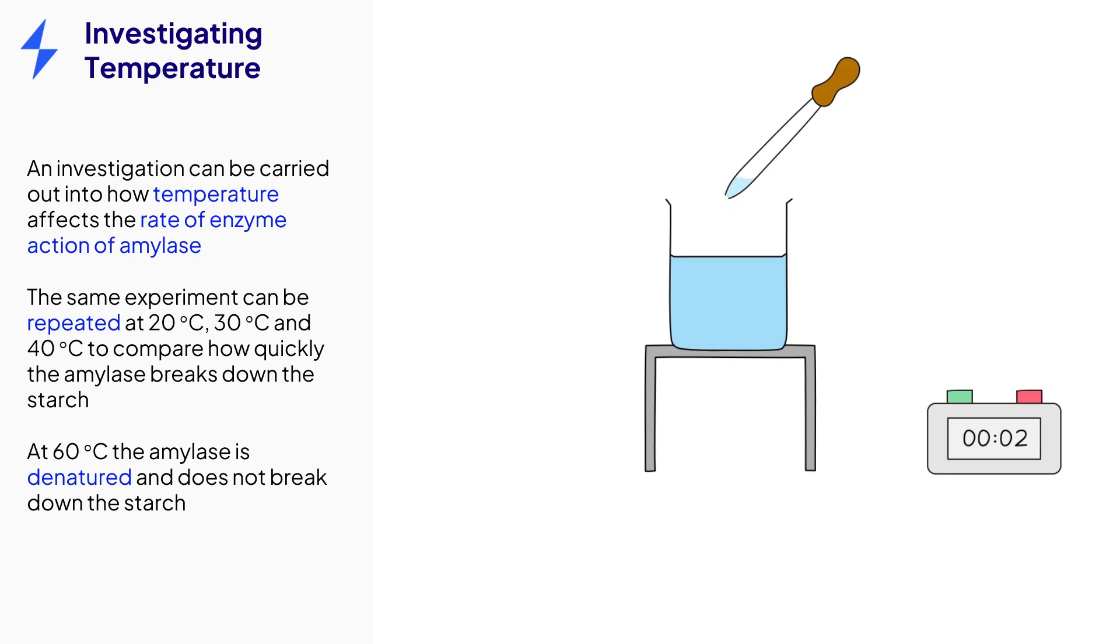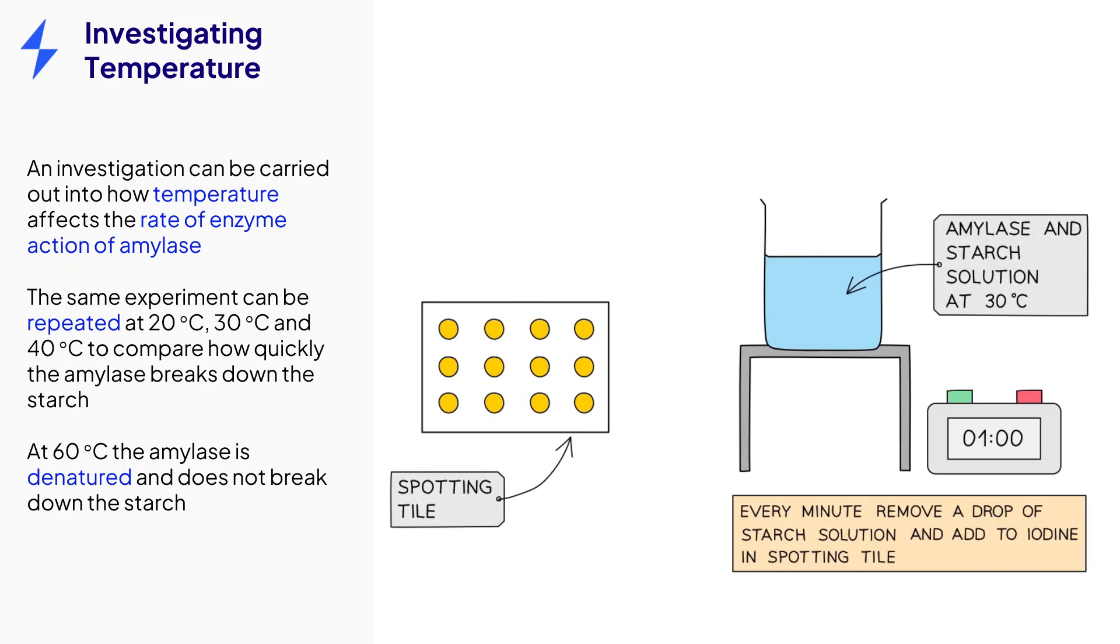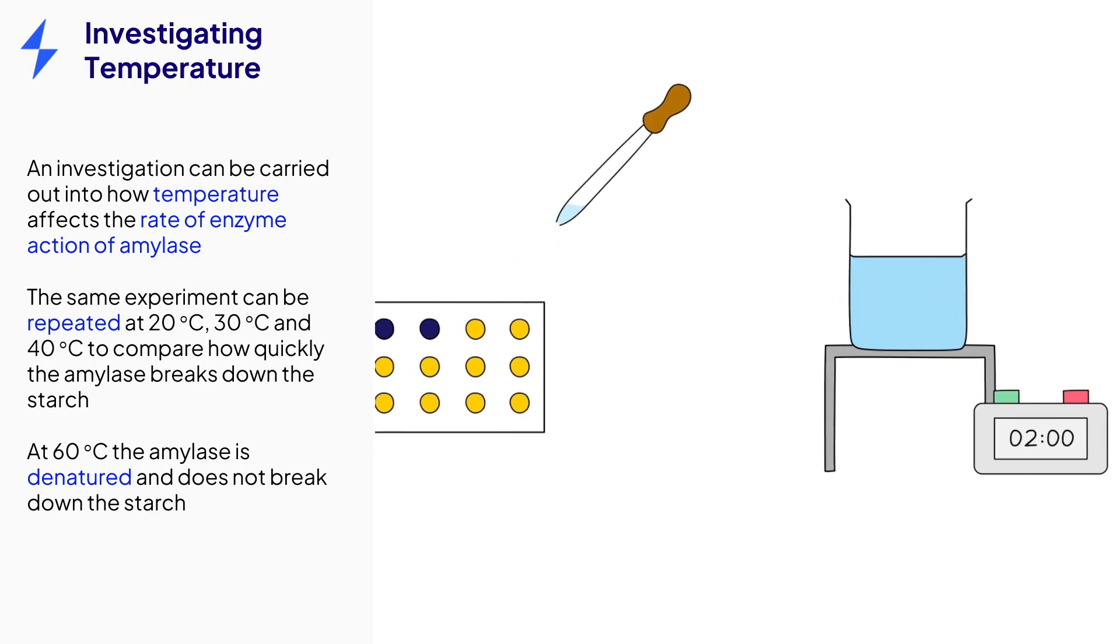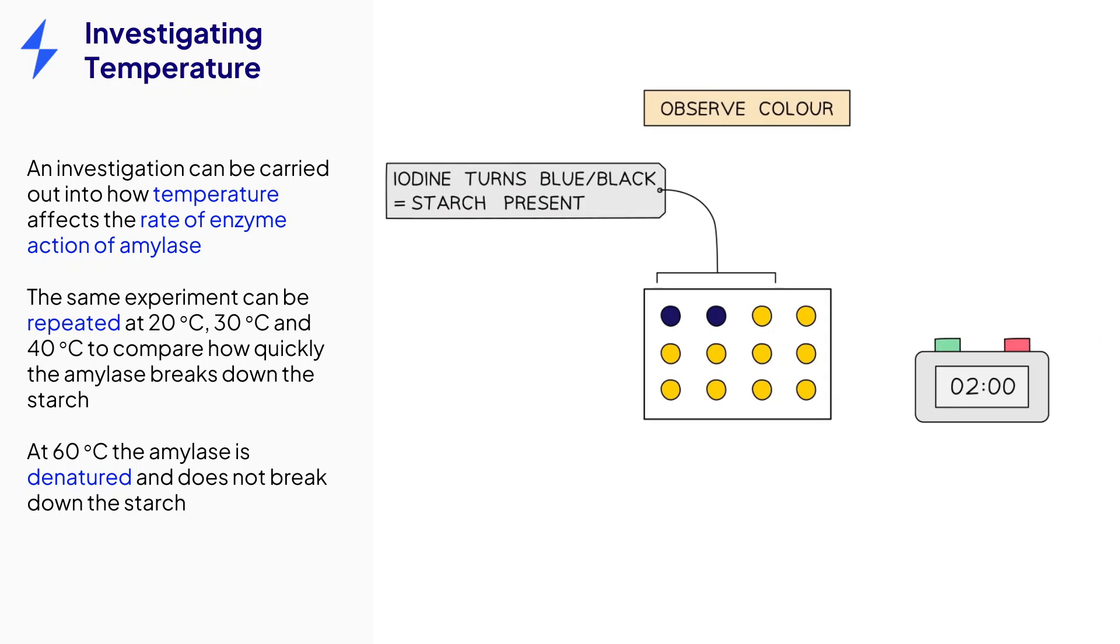Once a minute has passed, a sample of the solution is transferred into the first well of the tile. At this temperature, the starch should not be fully digested yet, and so the iodine turns blue-black. This process is repeated a minute later, with the iodine reacting to the continuous presence of starch by turning blue-black. The iodine will continue to turn blue-black as the starch continues to be broken down by the amylase.